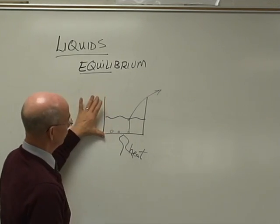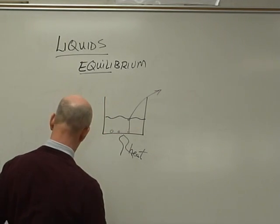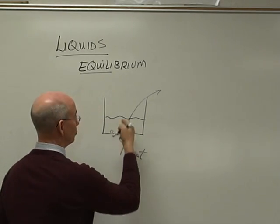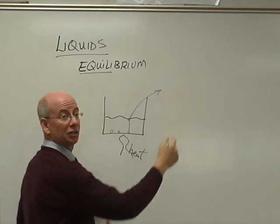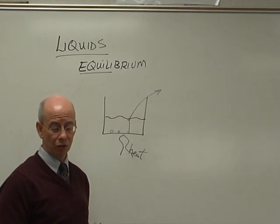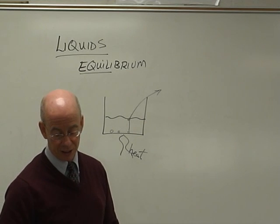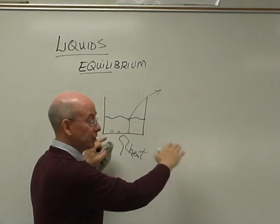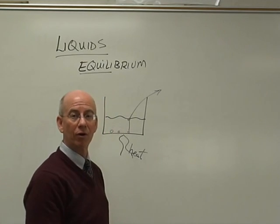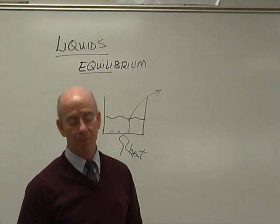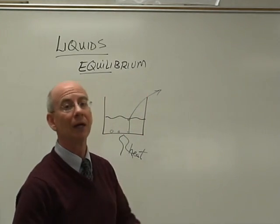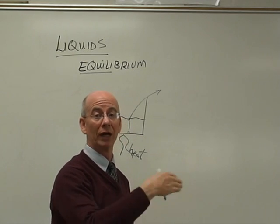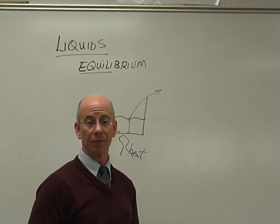Now, what you're looking at is an open system, so the gas can not only boil to the surface but it can just escape to the room. Evaporation takes place, and we know that if we were to increase the surface area of the water — throw it on the floor — it'll evaporate much quicker. If we were to heat it up, it'll evaporate much quicker. If there are currents blowing on it, it'll evaporate much quicker.